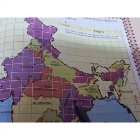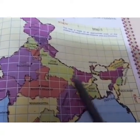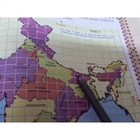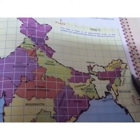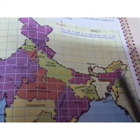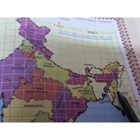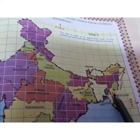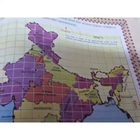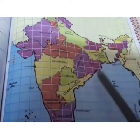The states shown include Rajasthan, Gujarat, Madhya Pradesh, Maharashtra, West Bengal, and Jharkhand. There are also the 7 states in the northeastern part of our country.